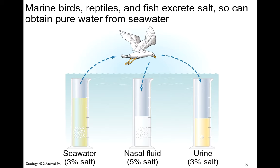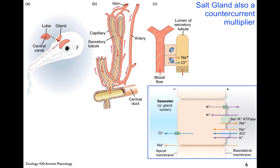They can drink seawater at 3% and produce a nasal fluid that's higher in salt concentration, plus urine. Without the salt gland they couldn't do this. It's accomplished through counter-current multiplication. In birds the salt glands are in the head — superorbital. In sea snakes they're in the mouth, in crocodiles in the tongue, and in lizards they're nasal. They function very similarly through active transport of sodium and chloride, and the salty secretion drips down and gets excreted, typically out the nose.